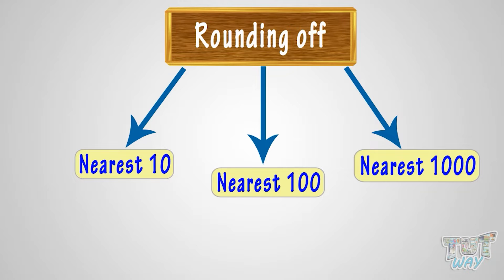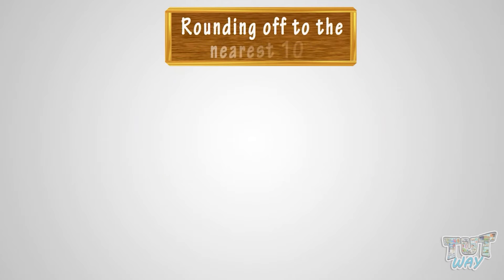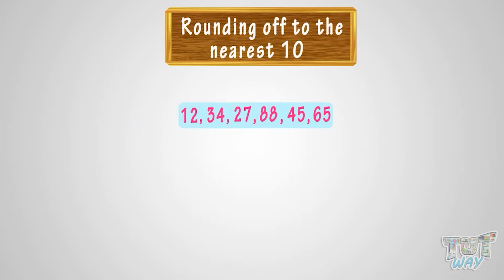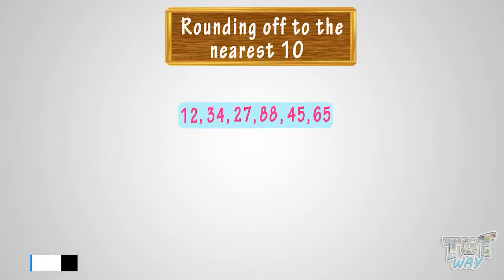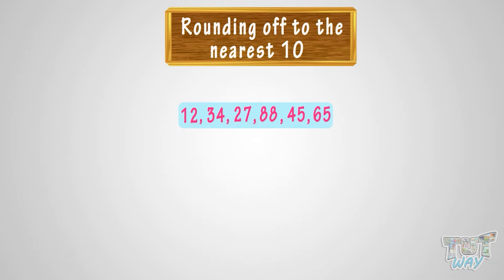Rounding off to nearest 10. So let's first learn rounding to the nearest 10. Here are a few numbers: 12, 34, 27, 88, 45, 65. We have to round them up to the nearest 10.